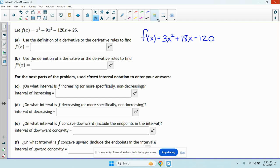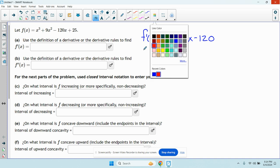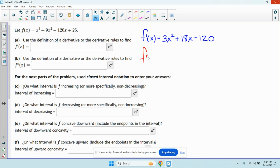Okay, so that's our derivative. So now it wants us to find the second derivative. That's easy enough. Apply the power rule again. Bring the 2 down. We have 6x plus 18.